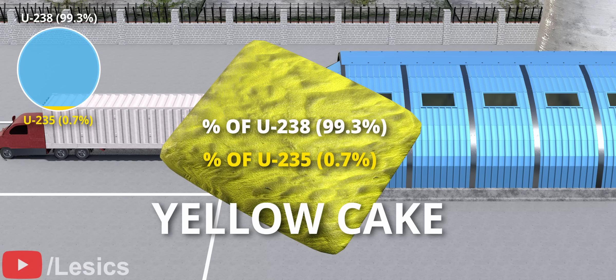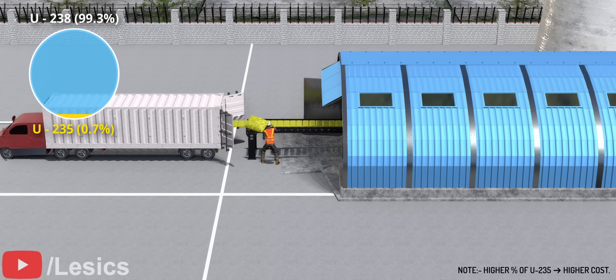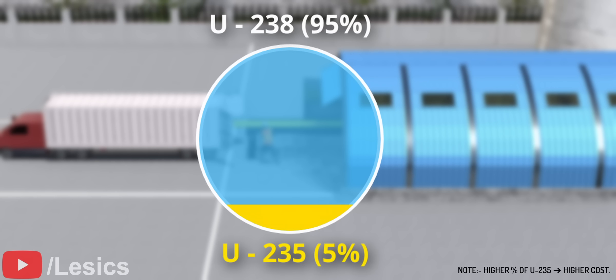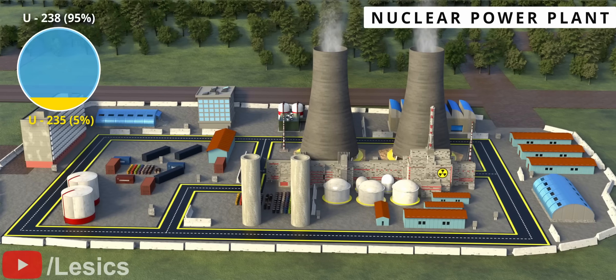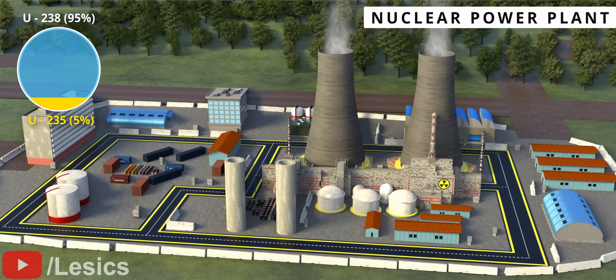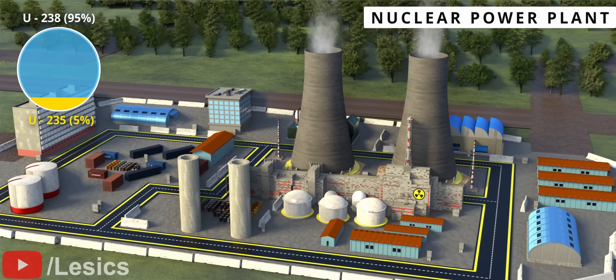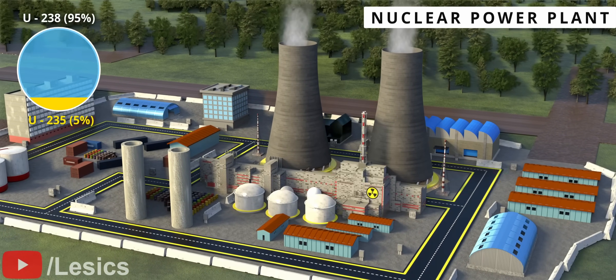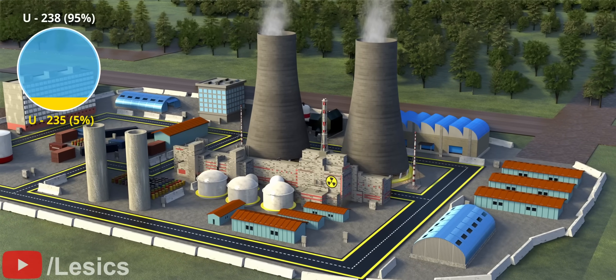In order to extract uranium-235 from natural uranium, a few complex enrichment processes are necessary. If we increase the uranium-235 to 5%, we can use this uranium as fuel in a nuclear reactor. One kilogram of uranium generates more energy than a thousand tons of coal.